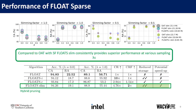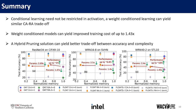In summary, conditional learning need not be restricted to activations — a weight-conditioned learning can yield a similar accuracy-robustness trade-off. Weight-conditioned models can yield improved training cost of up to 1.43x. A hybrid pruning solution can yield a better trade-off between accuracy and model complexity.